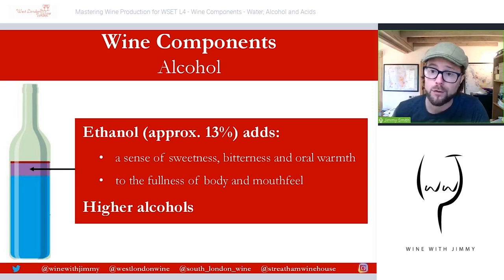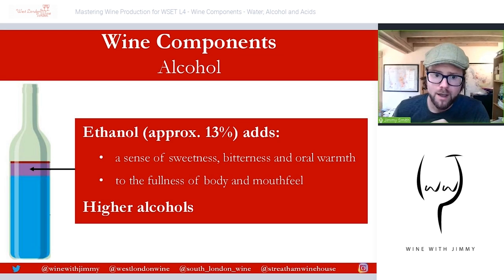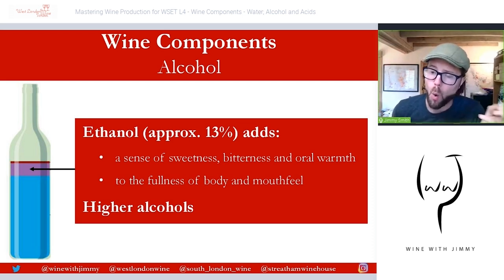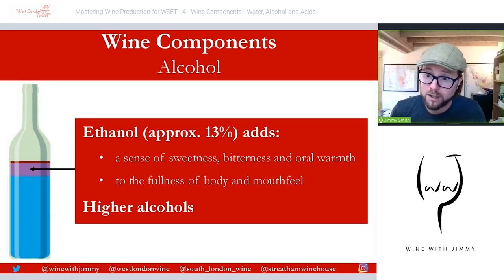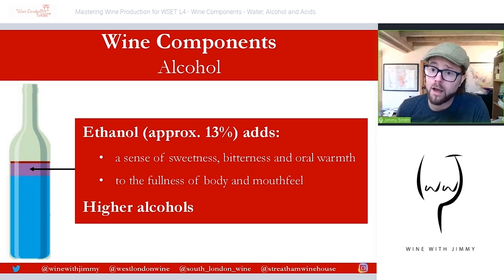Alcohol comes next. Ethanol is formed during fermentation and is the predominant alcohol in the wine. It has a slightly sweet smell and contributes a little sense of sweetness and bitterness, as well as what we describe as warmth in the mouth. When deciphering low, medium, or high alcohol, we talk about that warmth. Gewürztraminer, which commonly has high alcohol, often displays a hot ginger spice characteristic, quite commonly linked to that.